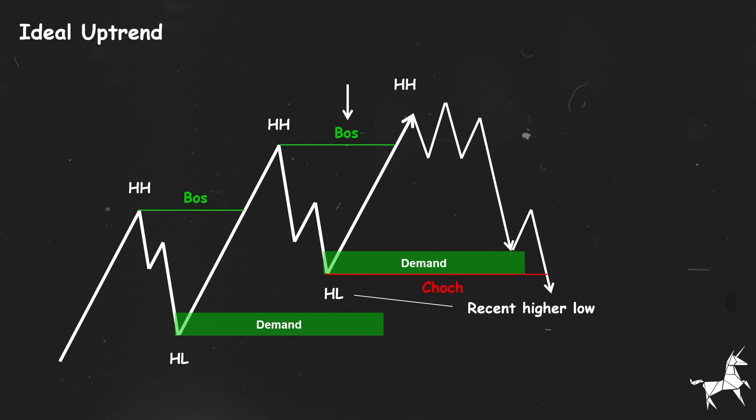A change in character occurs if we get a break and close below this low. This signals that the dominance of the buyers is now in question, and the market may shift structure and enter a downtrend phase.